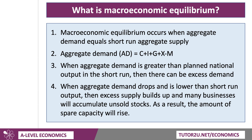When aggregate demand goes down and falls below the short-run level of production, excess supply tends to build up and many businesses will find they have accumulated unsold stocks. That is often a trigger for a change in production and employment. If there's a big fall in demand caused by an external shock, businesses at current production levels will find they have supplied too much, stock levels go up, and that is a signal at a macroeconomic level for production to contract. When aggregate demand goes down, the amount of spare capacity in the economy will rise.